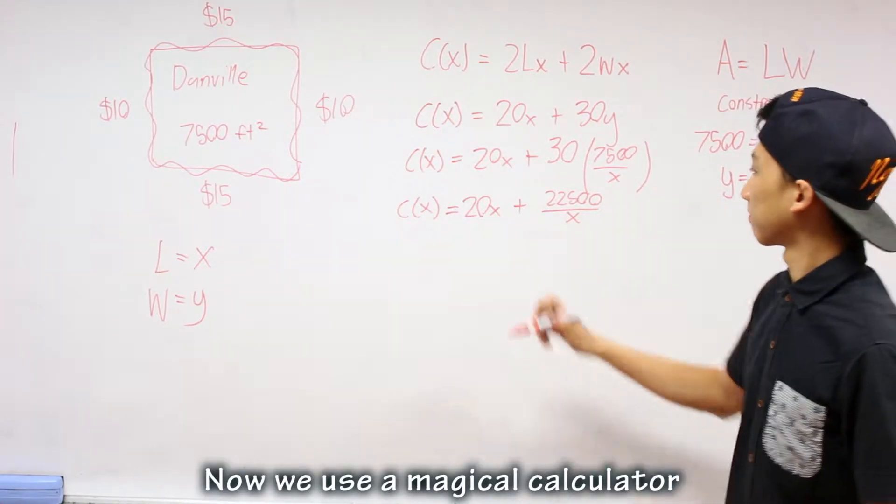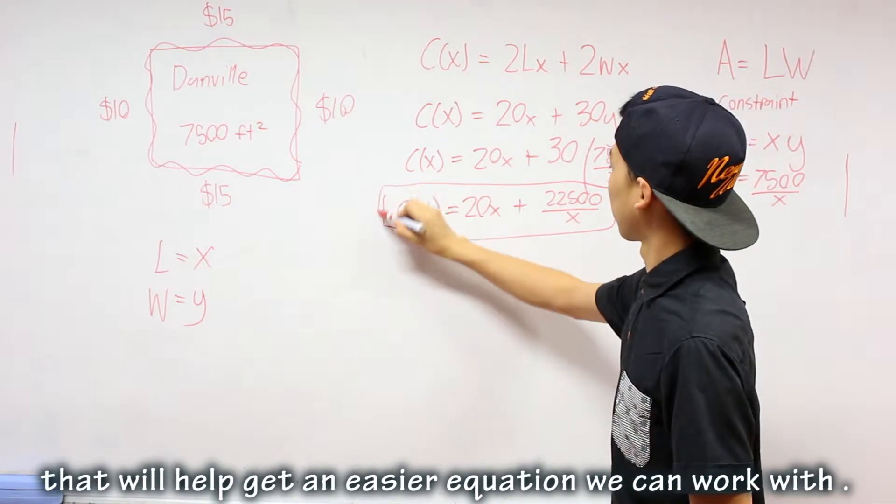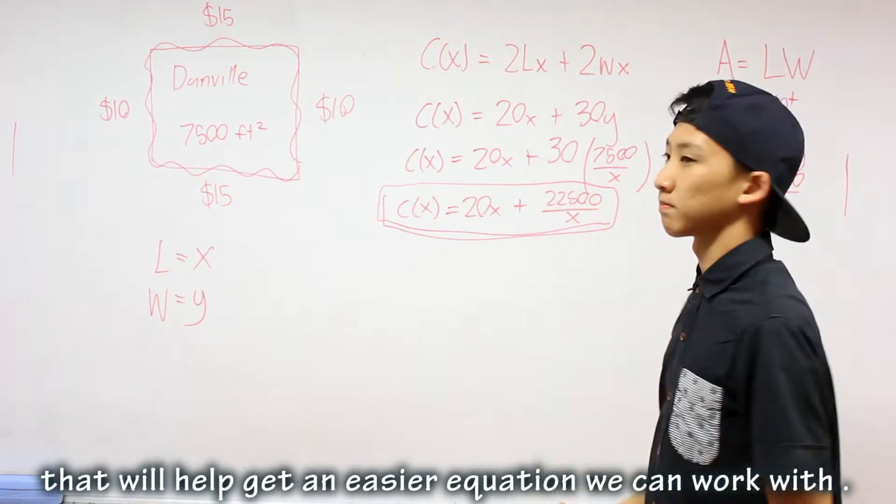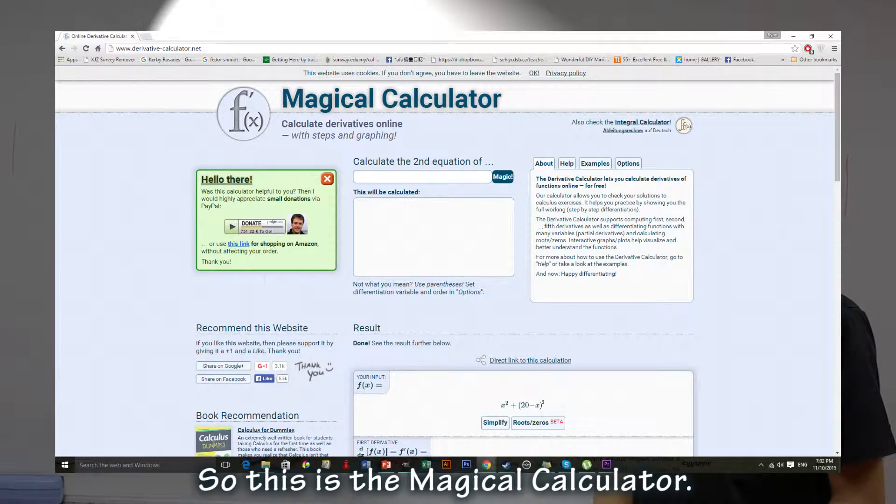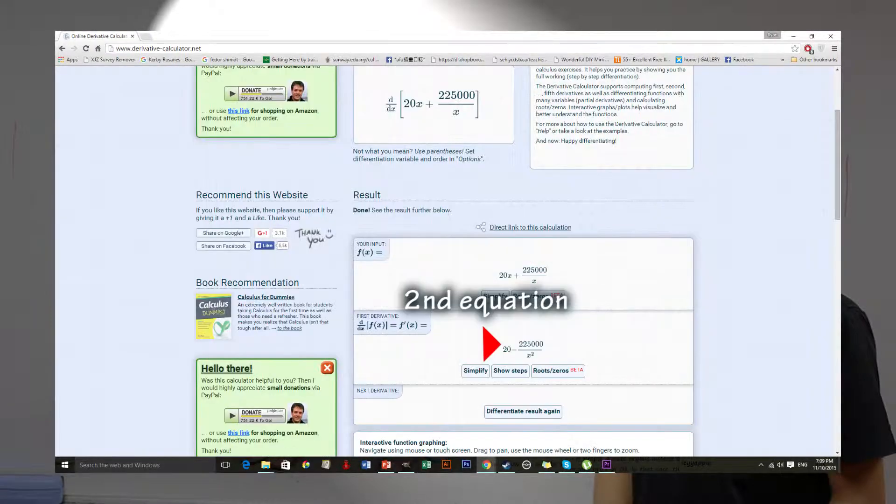Now we can use a magical calculator that will help get an easier equation we can work with. So this is the magical calculator. First, you plug in the equation you want to magically make easier into it. Next, you click on the magic button. Now you have an equation that will make your life easier.